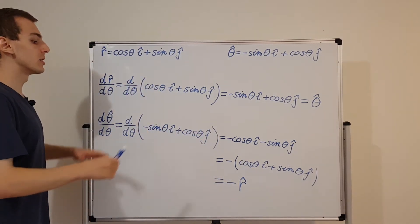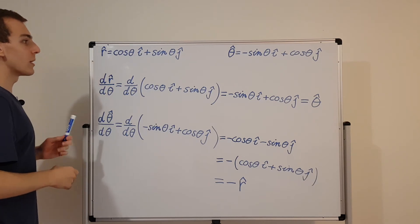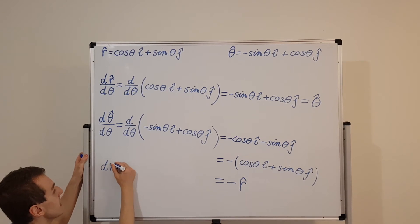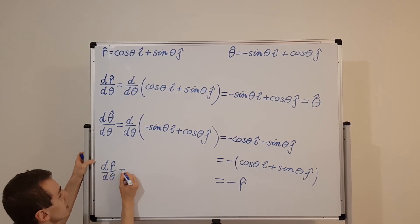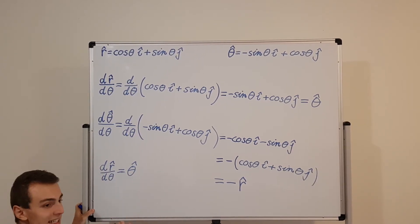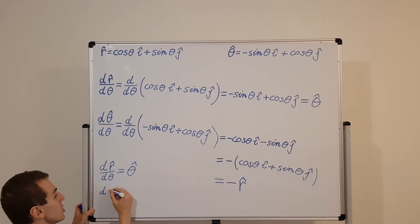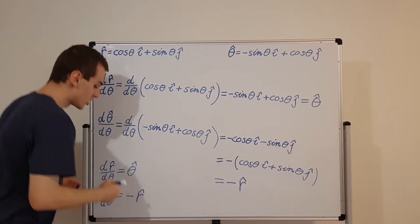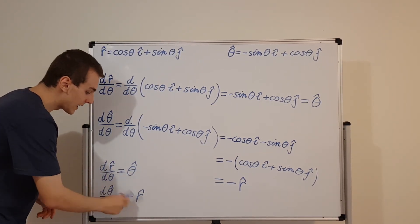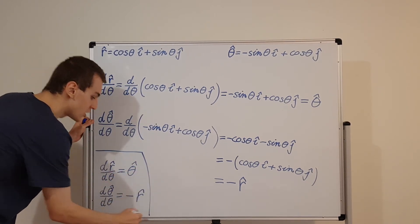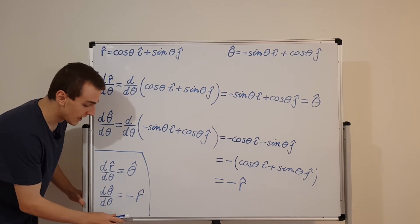So this is the relationship between the two unit vectors. When you differentiate the radial vector r hat with respect to theta, you get theta hat. And there is a slight anti-symmetry: when you differentiate theta hat with respect to theta, you get minus r hat. We're going to be using these two equations to simplify a lot of expressions in the next few videos.